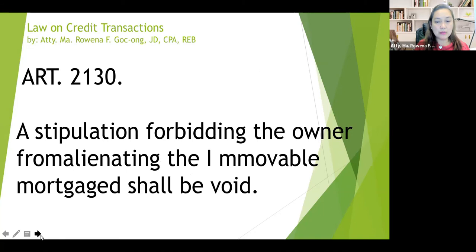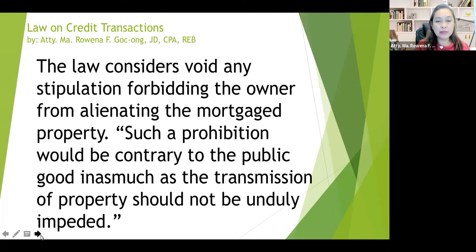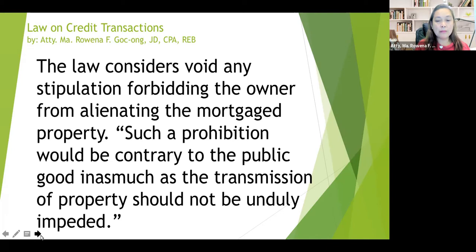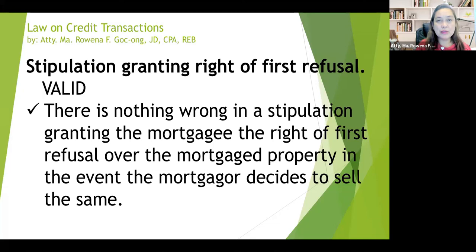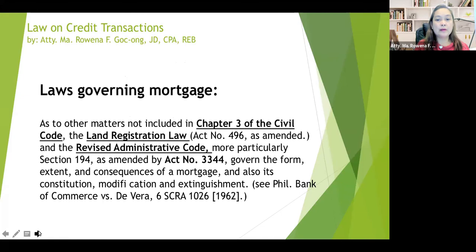The law considers void any stipulation forbidding the owner from alienating — it is contrary to public policy inasmuch as transmission of property should not be unduly stipulated. But a stipulation granting the right of first refusal is valid. There is nothing wrong in a stipulation granting the mortgagee the right of first refusal over the mortgaged property in the event that the mortgagor decides to sell the same. So if the mortgagor decides to sell it, the mortgagee has the right to be offered to buy the property first.